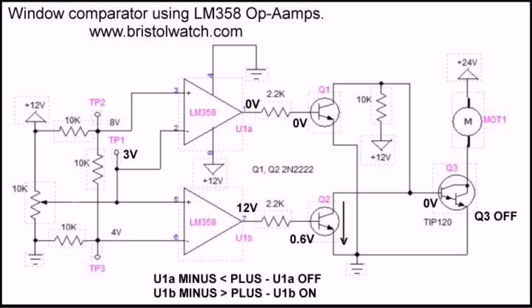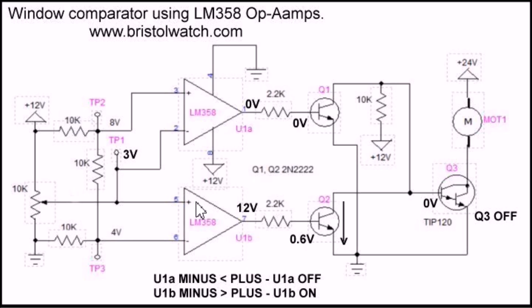Here is the exact circuit that you saw being demonstrated in the video a few moments ago. Other than I'm using a motor in the diagram instead of an LED, it works identically. What we have here is a voltage divider using three 10k resistors. Test point two up here is at eight volts and it's on the plus input of the upper comparator. And we have four volts on the minus input of the lower comparator. The plus and minus of the two comparators are tied together back to a 10k pot.